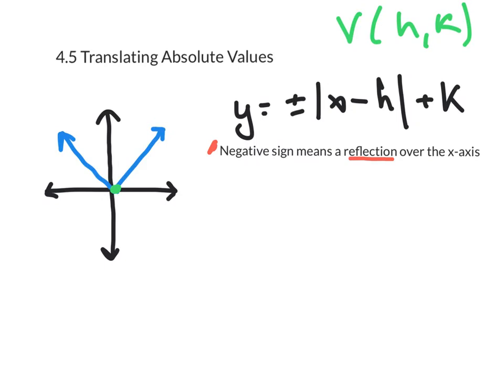So again, as I mentioned, if there's no negative sign, it's going to look like the graph over here in blue. If there's a negative sign, the function will flip or reflect over the x-axis, and it will basically look like an upside-down v. So that's just the first part of the equation.